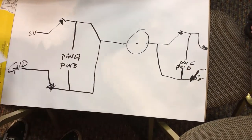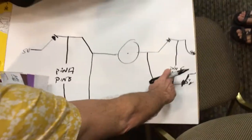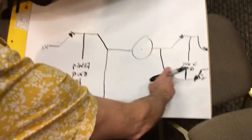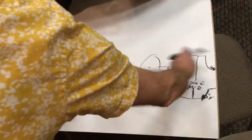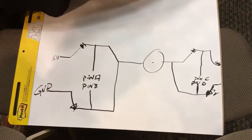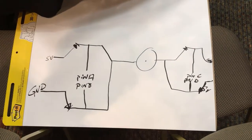So now when I turn on pins D and B, power flows this way through the motor and it spins one way. When I turn on pins A and C, power goes the other way and the motor spins the opposite way. This is called an H-bridge driver.